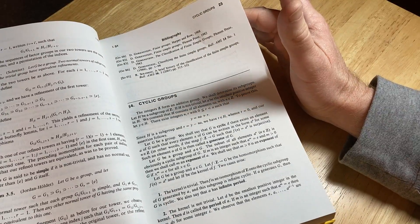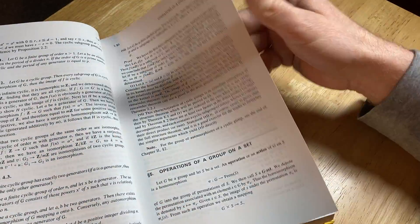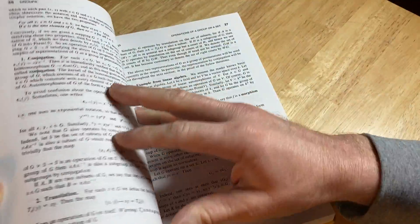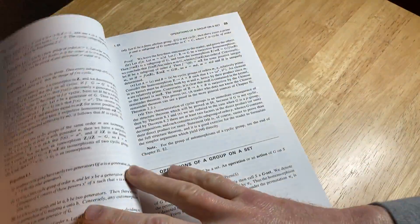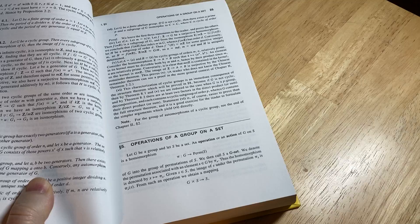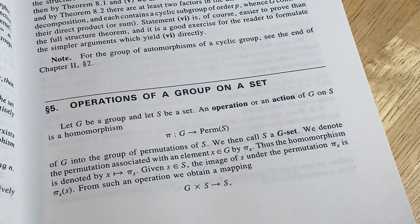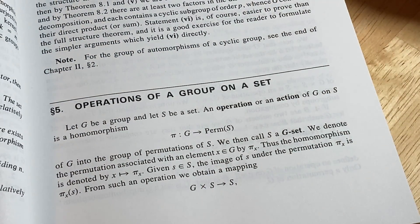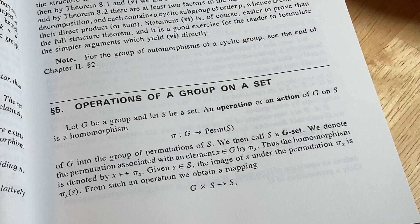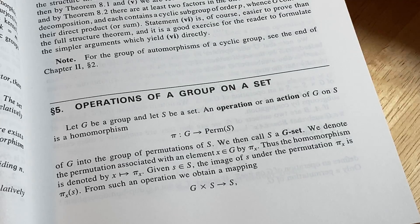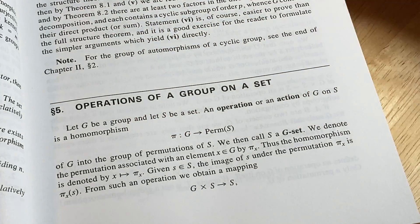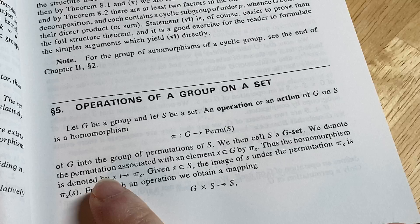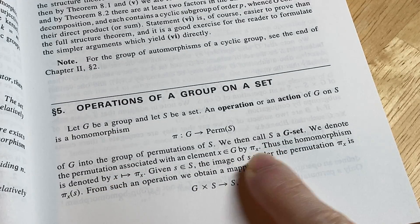So sometimes when you have questions, you can search in books for explanations, and some books will be better than others. What's this? This is cool. Operations of a group on a set. Let's look at this together. Let G be a group and S be a set. An operation or an action of G on S is a homomorphism from G into the group of permutations of S.